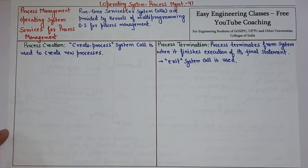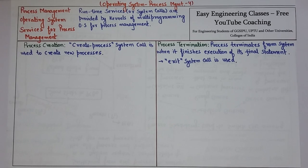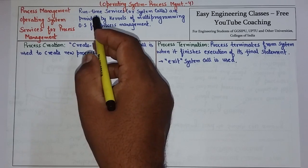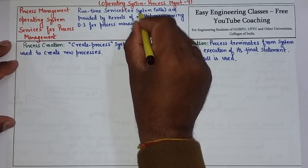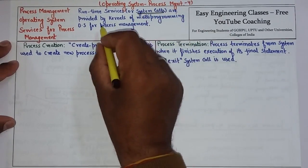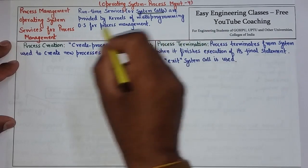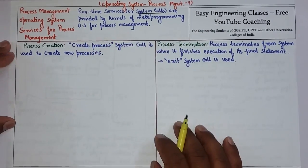Hello everyone. In this video we are going to see the services for process management. The different services present for any process management are process creation, process termination, fork, join, suspend, resume, and so on. We will see each of those process services one by one. These are the runtime services which are also called as system calls, and these services are provided by kernels of multiprogramming operating systems for process management.